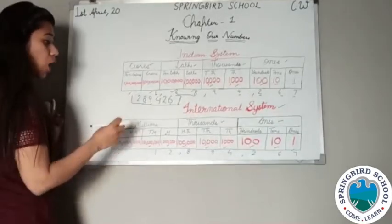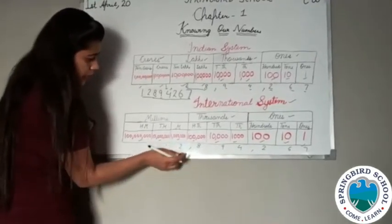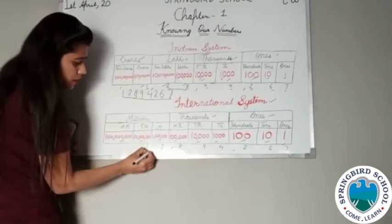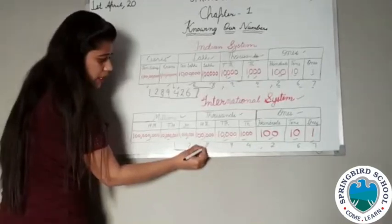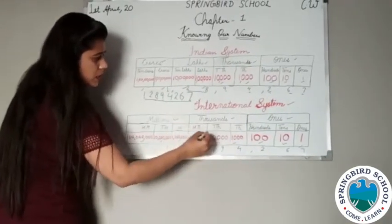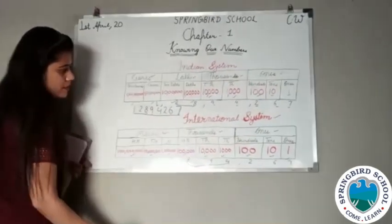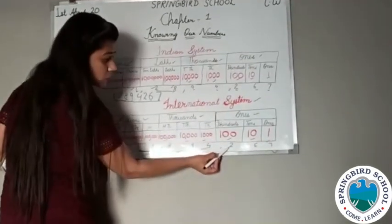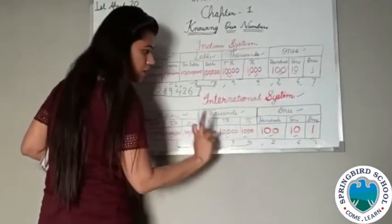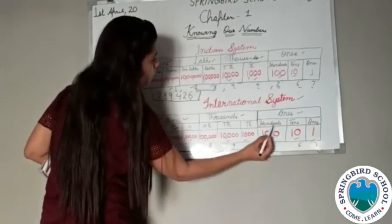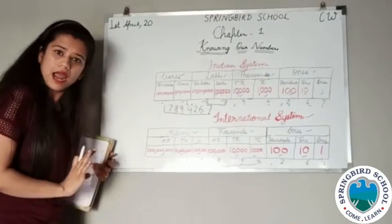Now how do you write these numbers in words? One and two come in the million head, so write them together: twelve million. Then eight, nine, four come in the thousands head: eight hundred ninety-four thousand. And the ones head: two hundred sixty-seven — these are not separate because sixty-seven is a two-digit number. So you write two hundred sixty-seven. Clear the difference between the Indian and international system?